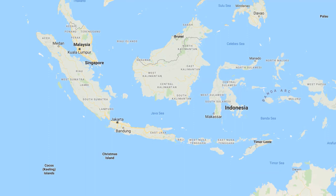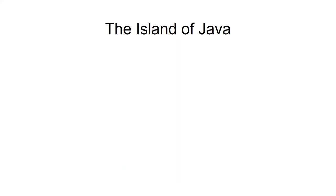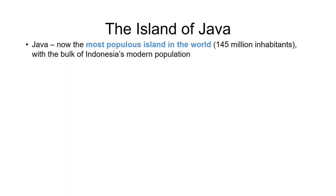This is the modern Republic of Indonesia. Java is not the biggest island, but it is by far the most populous. Bali is slightly to the east and Sumatra slightly to the northwest. Java is the most populous island in the world, with about 145 million inhabitants — more than Japan and about the same as Russia. It's a little bit larger than England at 139,000 square kilometers, and about seven degrees south of the equator, with year-round high heat and high humidity.